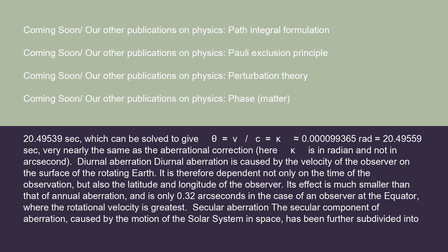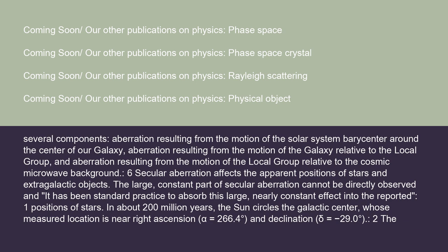Secular aberration, the secular component of aberration caused by the motion of the solar system in space, has been further subdivided into several components: aberration resulting from the motion of the solar system barycenter around the center of our galaxy; aberration resulting from the motion of the galaxy relative to the local group; and aberration resulting from the motion of the local group relative to the cosmic microwave background. Secular aberration affects the apparent positions of stars and extragalactic objects. The large constant part of secular aberration cannot be directly observed and it has been standard practice to absorb this large, nearly constant effect into the reported positions of stars.